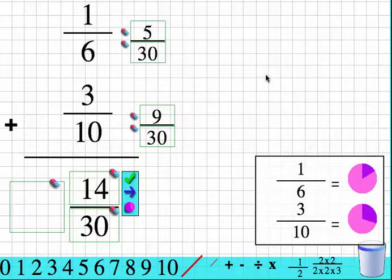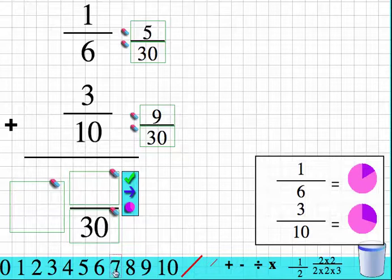So I know the greatest common factor of 14 and 30 is 2. So 14 thirtieths is actually 7 fifteenths. So I use this little eraser tool. Erase 14...